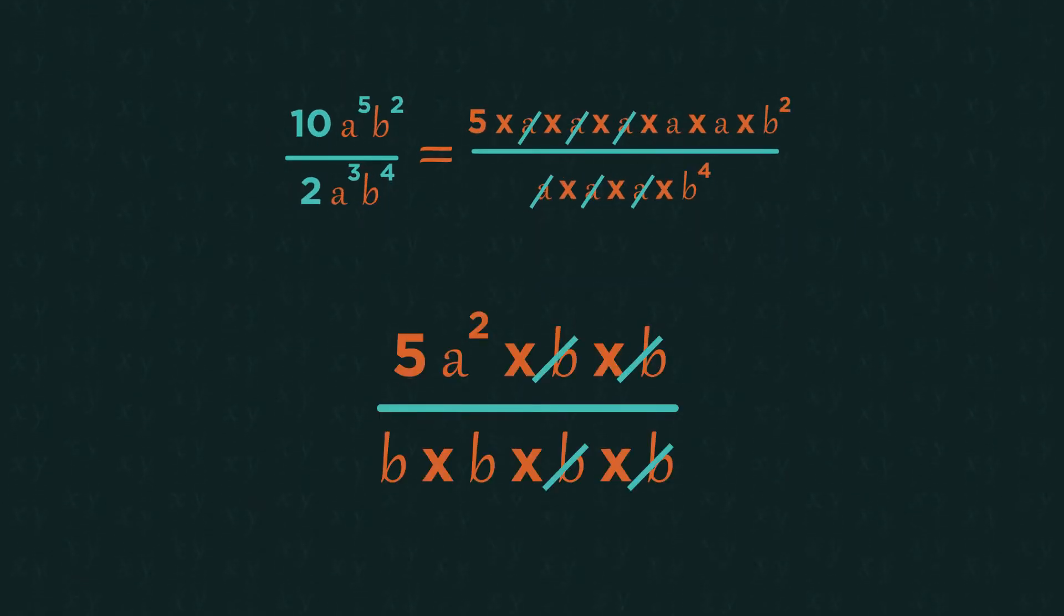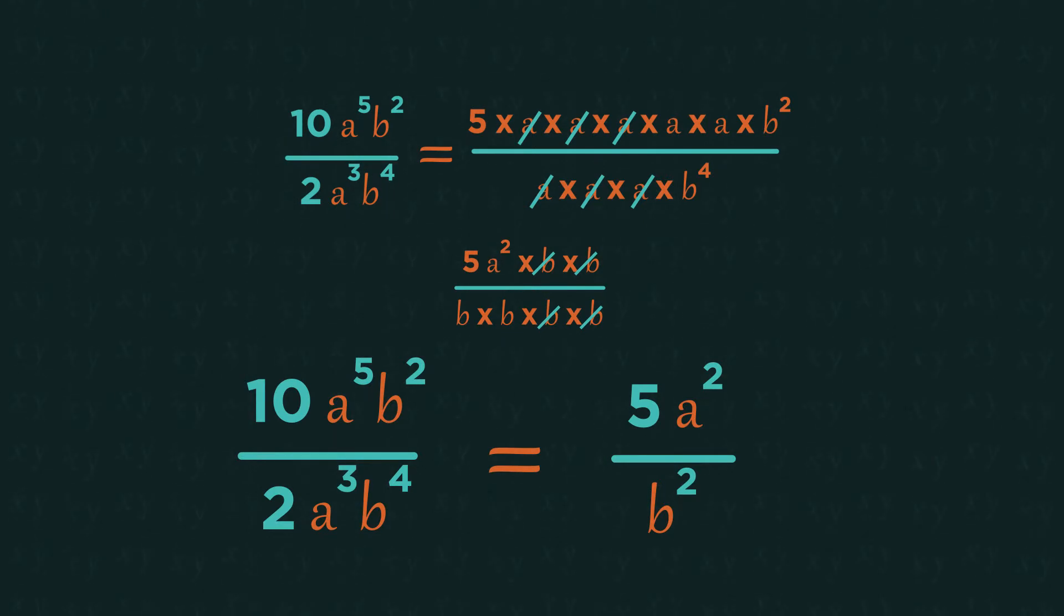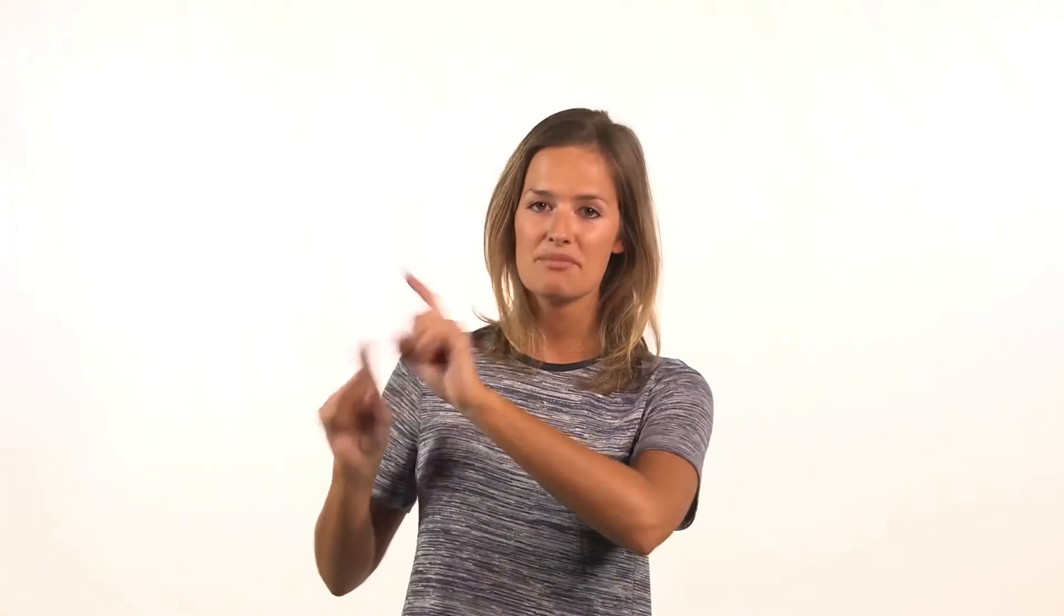And then the same for the b's. We can cancel out 2 b's, leaving just 2 b's in the denominator, giving us our final answer. You don't need to write out all of the letters every time. You can just look at the powers. So 5 subtract 3 leaves 2 on top. And 4 on the bottom, subtract 2, leaves 2 on the bottom.